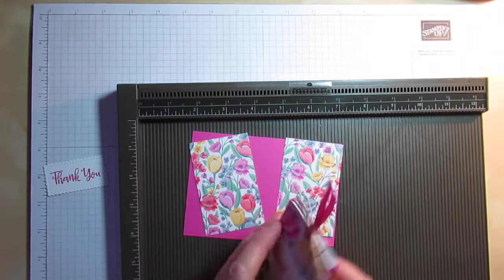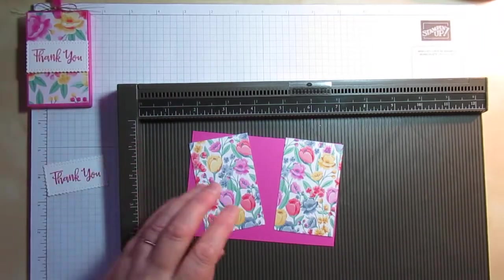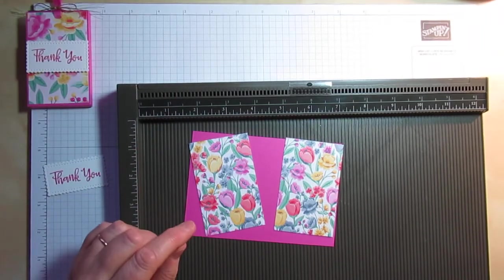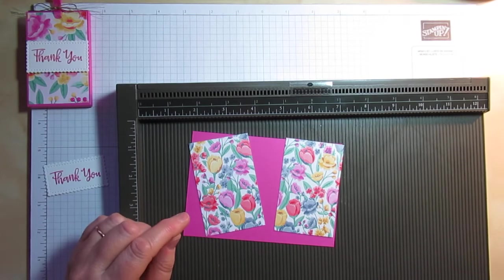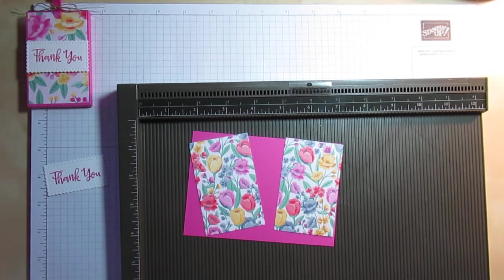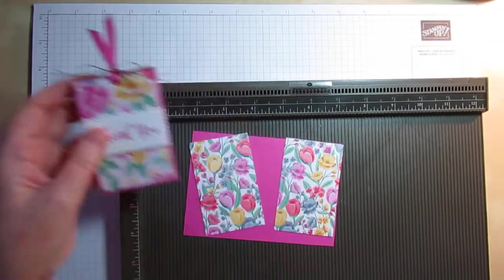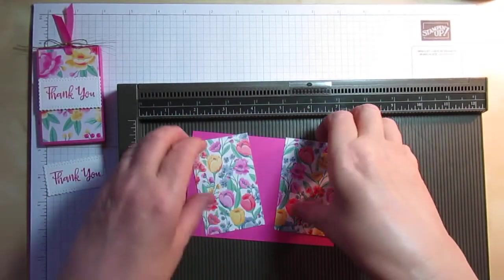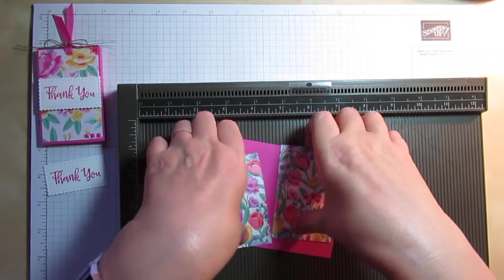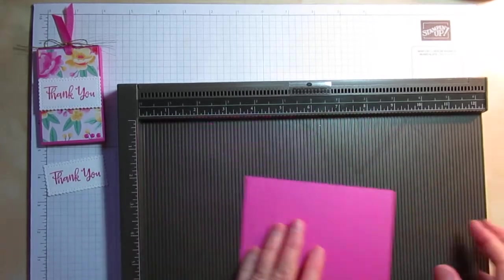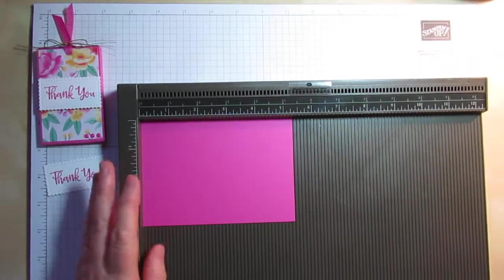and two pieces of designer series paper which each measure 2 1/8 by 3 3/8, just to put on the front and the back. And I used the new in-colour enamel dots to decorate this along the bottom here. So I'm using the same colours, but just a different sheet of paper. So I'm just going to quickly do my scoring.